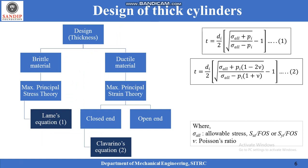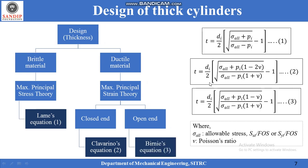If ductile material is chosen for the design, it is observed that maximum principal strain theory yields better results. The application of maximum principal strain theory for a closed-end vessel results in an equation known as Clavarino's equation. The application differs depending upon the end condition: in case of a closed cylinder all three stresses are considered, whereas for an open cylinder longitudinal stress need not be considered. Application on an open-ended vessel by neglecting longitudinal stress results in Birnie's equation, given by equation 3.